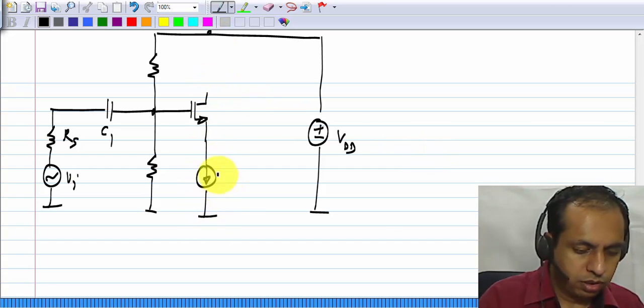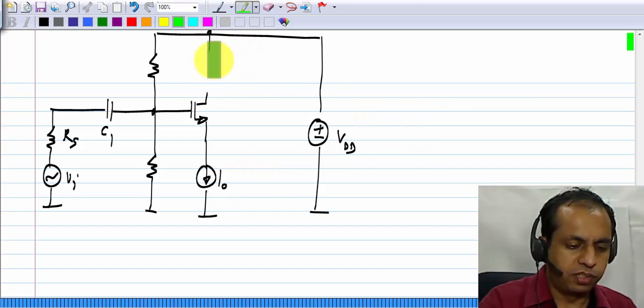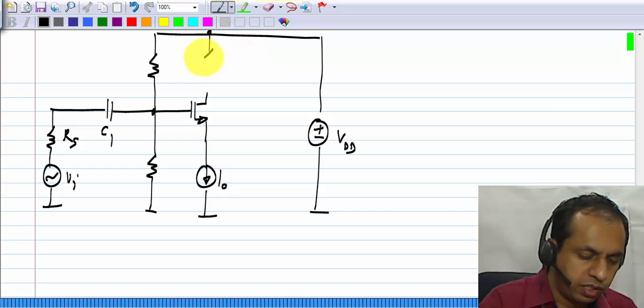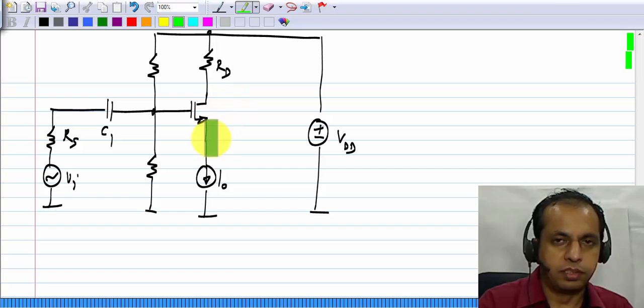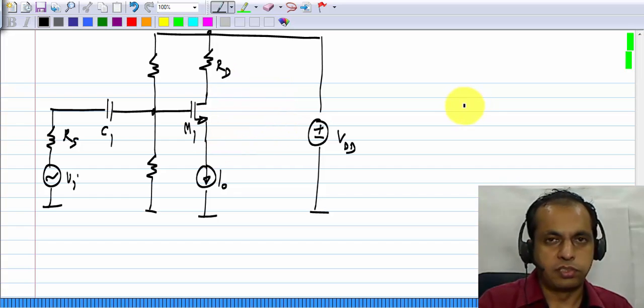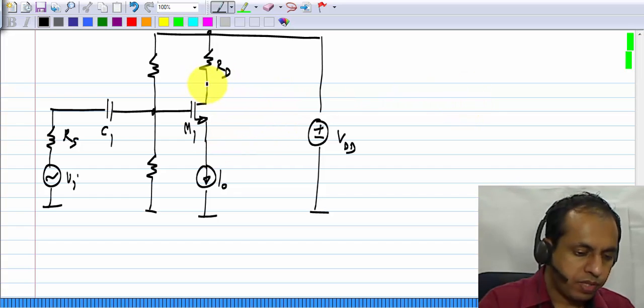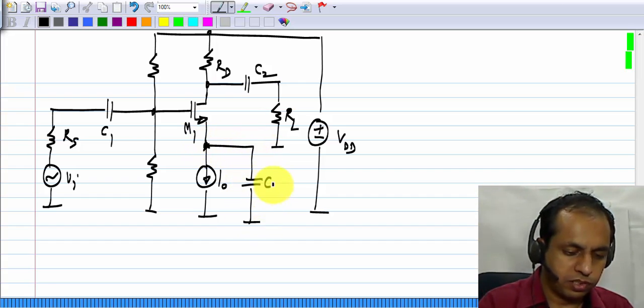The source is biased by connecting a current source to it. A path for the drain current is created to VDD through a resistor Rd. Finally, we have to evaluate the drain source voltage of this transistor M1 and make sure that it is indeed in saturation region. And the load will be coupled through a second capacitor C2. And finally, the source of the transistor is shorted to ground using a capacitor C3.